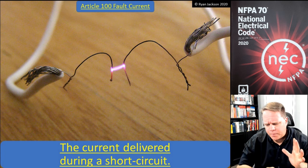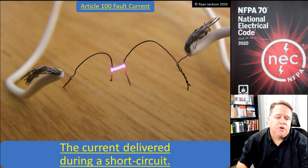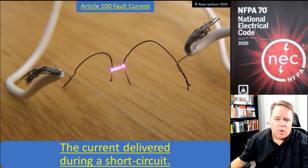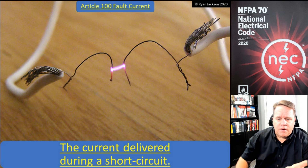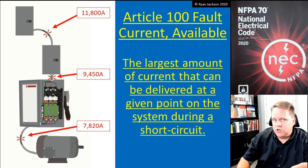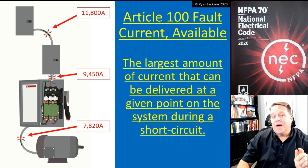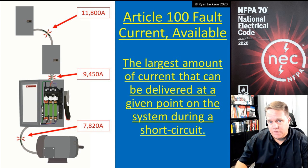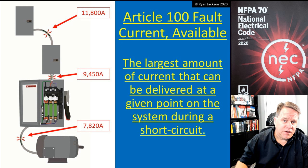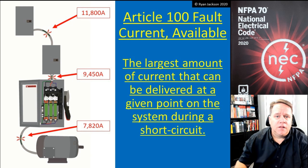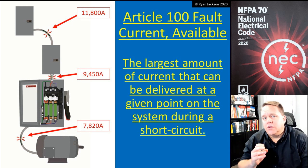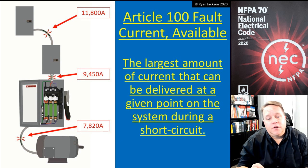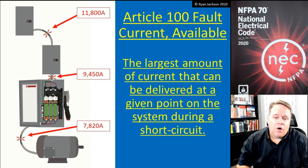Fault current is the current that's delivered during a short circuit — however much current flows when you bang those two wires together is the fault current. We added that definition really so that we could add this next one, which is critically important: available fault current. That's the largest amount of current that can be delivered at a given point on the system during a short circuit.